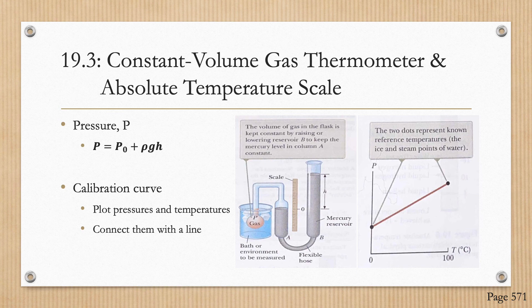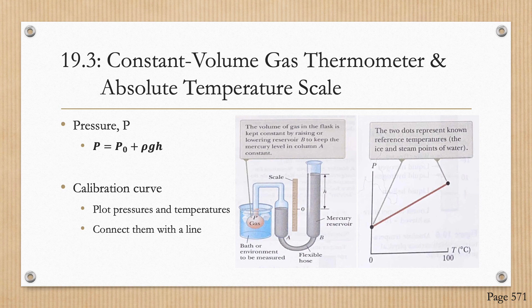In this next section we discuss the constant volume gas thermometer and the absolute temperature scale. A constant volume gas thermometer is shown in this graphic; the physical change exploited is the variation of pressure of a fixed volume of gas with temperature. The flask is immersed in an ice water bath and mercury reservoir B is raised or lowered until the top of mercury in column A is at zero on the scale. The height difference between the mercury levels in reservoir B and column A indicates the pressure in the flask at 0 degrees Celsius, given by P equals atmospheric pressure plus liquid density times gravity times height.